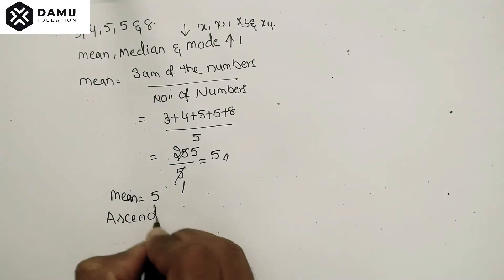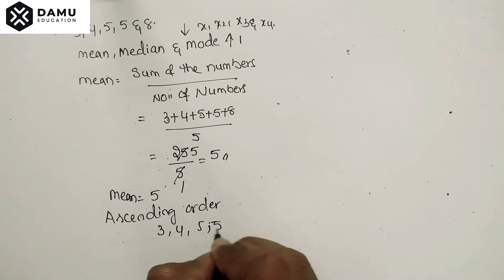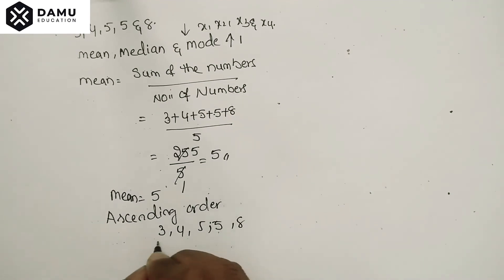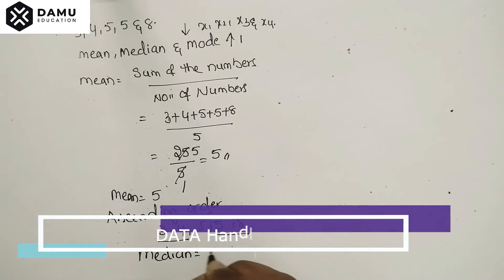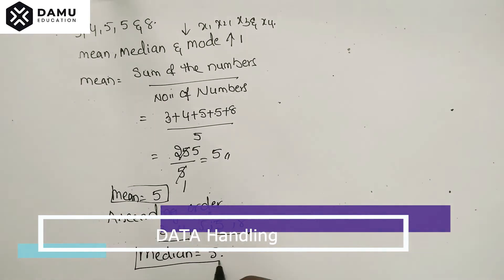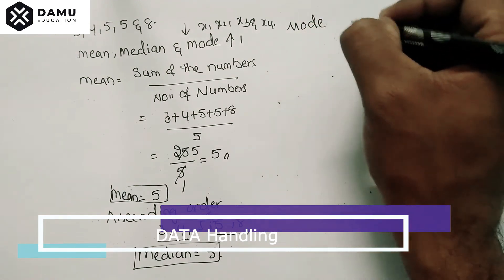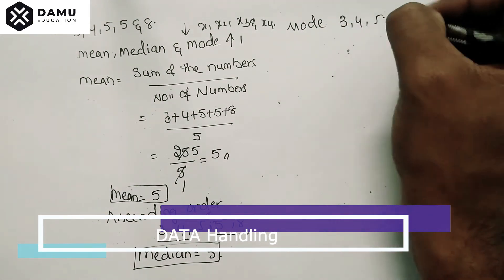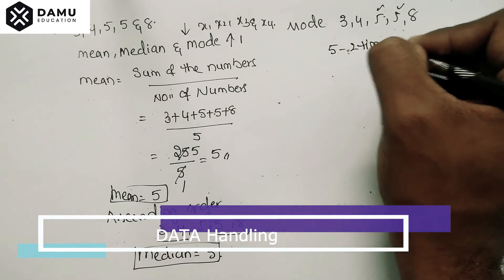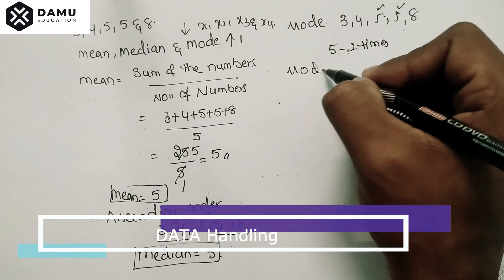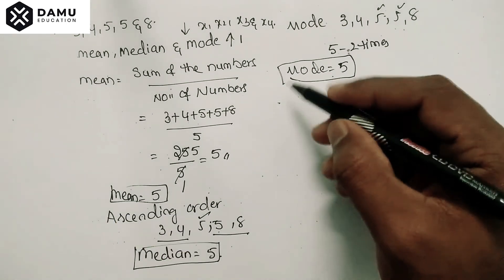Writing in ascending order: three, four, five, five, eight. Removing the first two and last two values leaves the middle value — the median is five. For the mode, the number five appears two times, which is more than any other value, so the mode is also five.